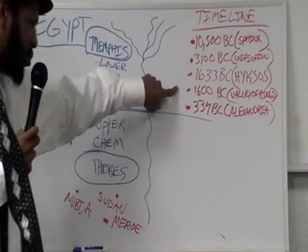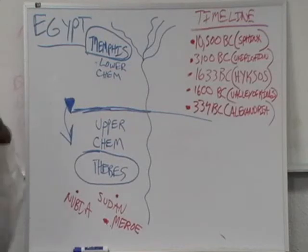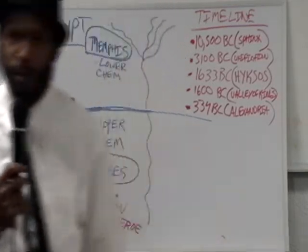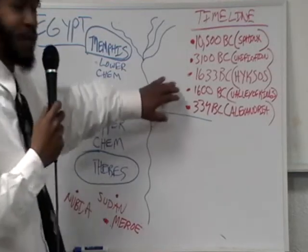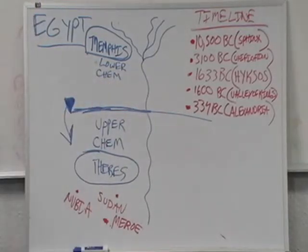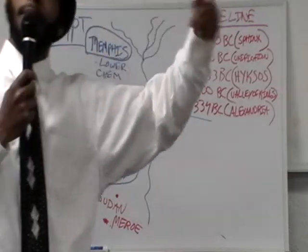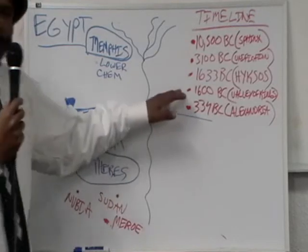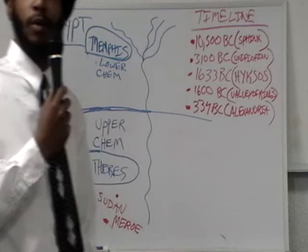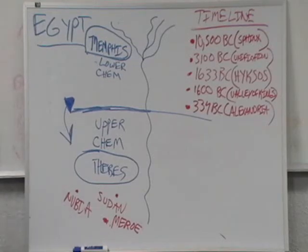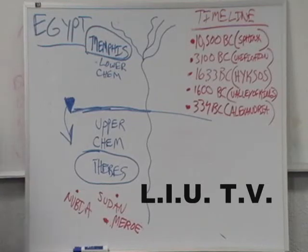So from 1600 BC to 334 BC, 1600 minus 334, what's that? 1266. I might have done that math wrong. You're going to have to correct me on the quiz. 1266 years later, after the Valley of the Kings has been formed, after the Hyksos have been expelled, you've had Israel, Jerusalem, and all of that being built. 1266 years later, the descendants of the Hyksos.